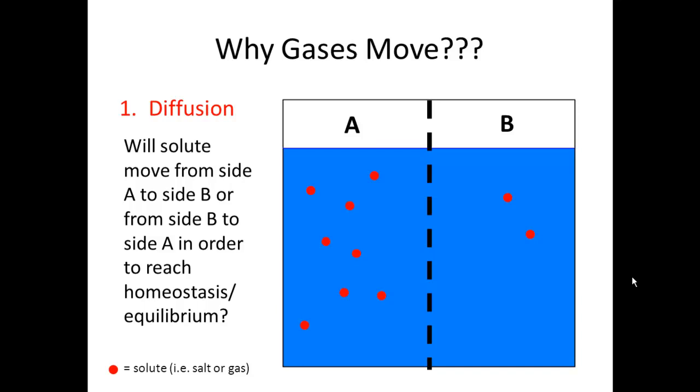A question came up on the left-hand side: will the solute move from side A to side B, or from side B to side A, in order to reach homeostasis or equilibrium? In other words, which way are these particles going to move so that we have an even amount on each side? Well, hopefully this one will be self-explanatory. We're going to move from side A to side B. As you can see, we have five on the left-hand side and five on the right-hand side.